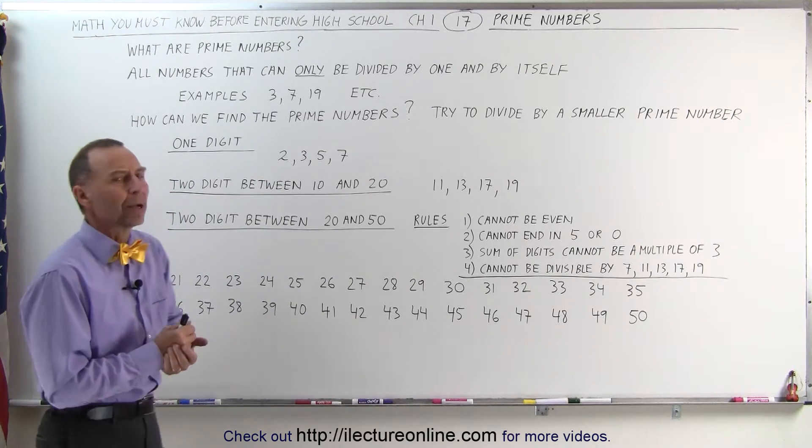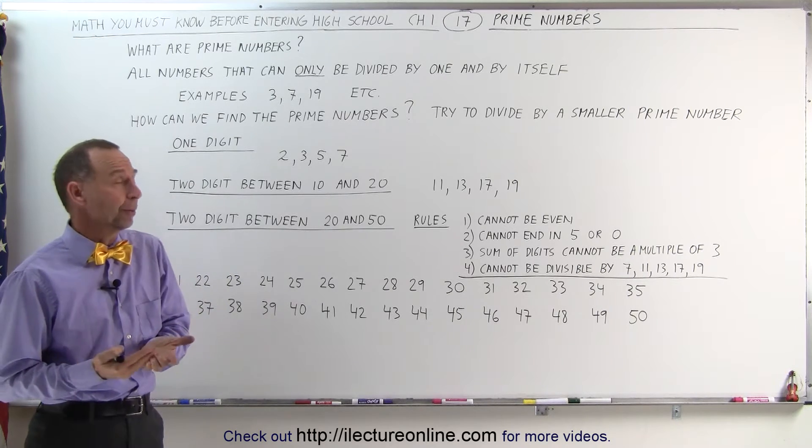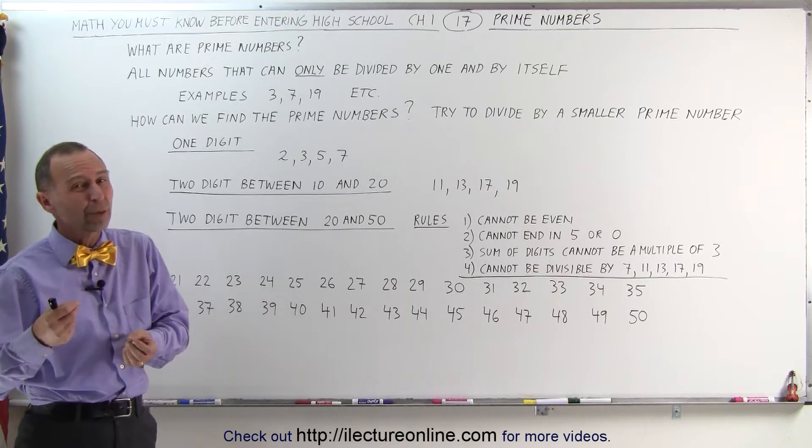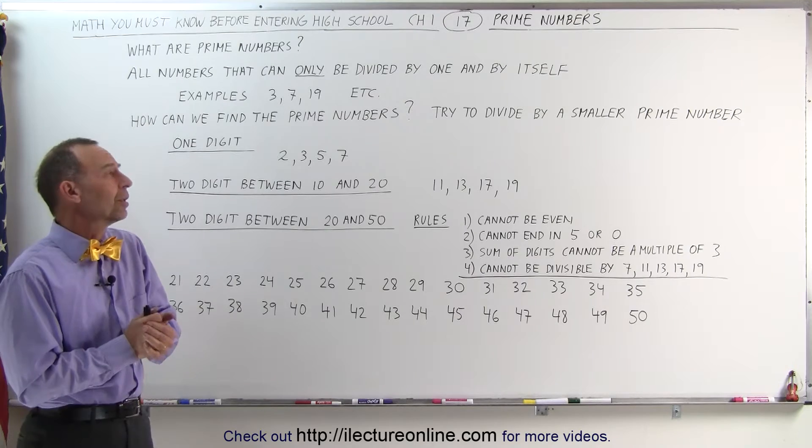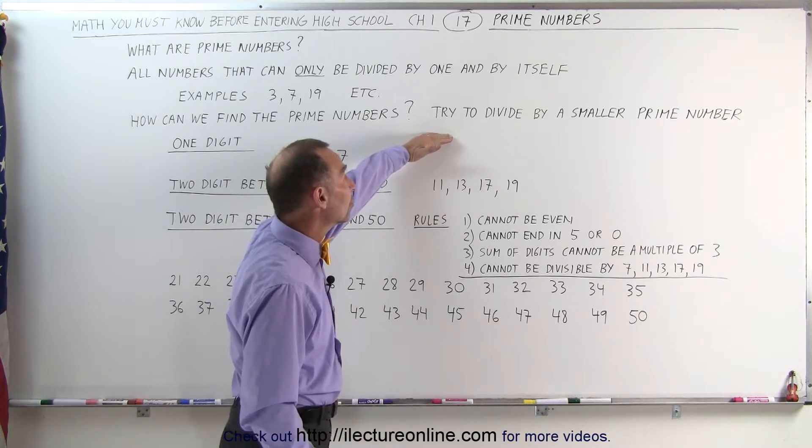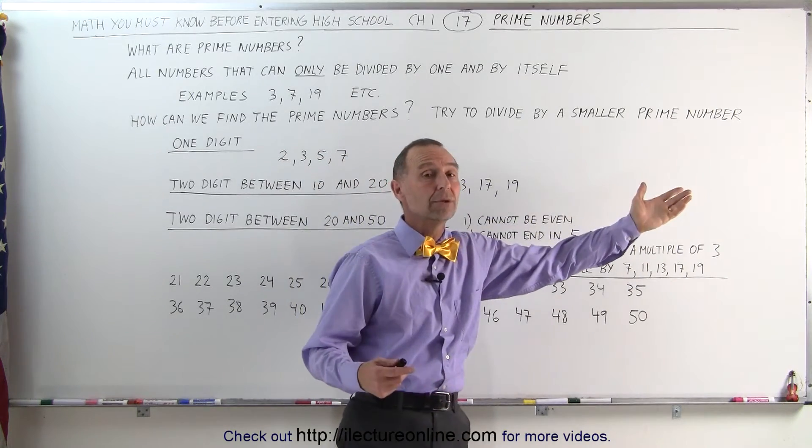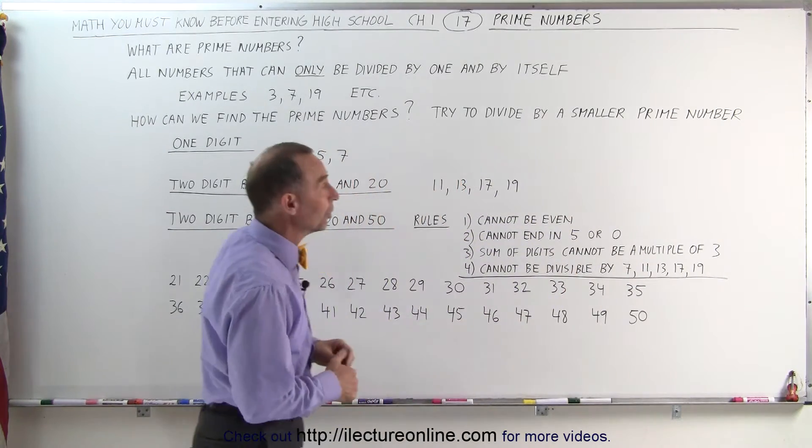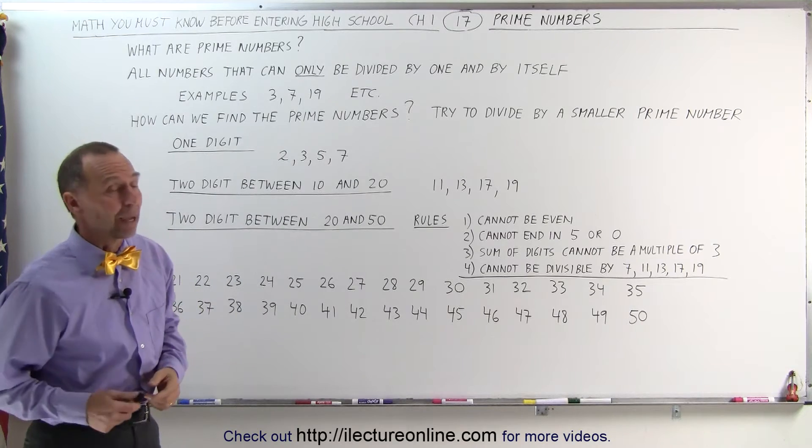How do you find the prime numbers? How can you pick a number and realize it's a prime number? Well, there's some ways in which we can get a pretty good idea whether or not a number is a prime number. First of all, the main idea is try to divide number by a smaller prime number and see if it's possible. If it is, then it's not a prime number.